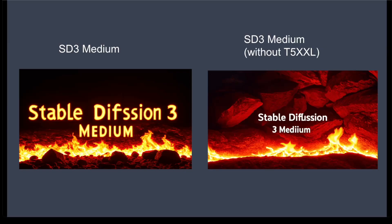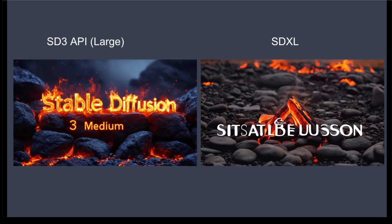Stable Diffusion 3 is supposed to have improved text generation over previous models. Let's try generating the phrase 'Stable Diffusion 3 Medium' over some fires and lava. The full model is a little bit better in that the words blend into the background slightly more naturally, but only slightly. Comparing that with the SD3 API — which we suspect is the large model — the text blends in very nicely with the fires on the rock. So the SD3 API still has a place if you want to generate text, while SDXL doesn't really handle text generation well.